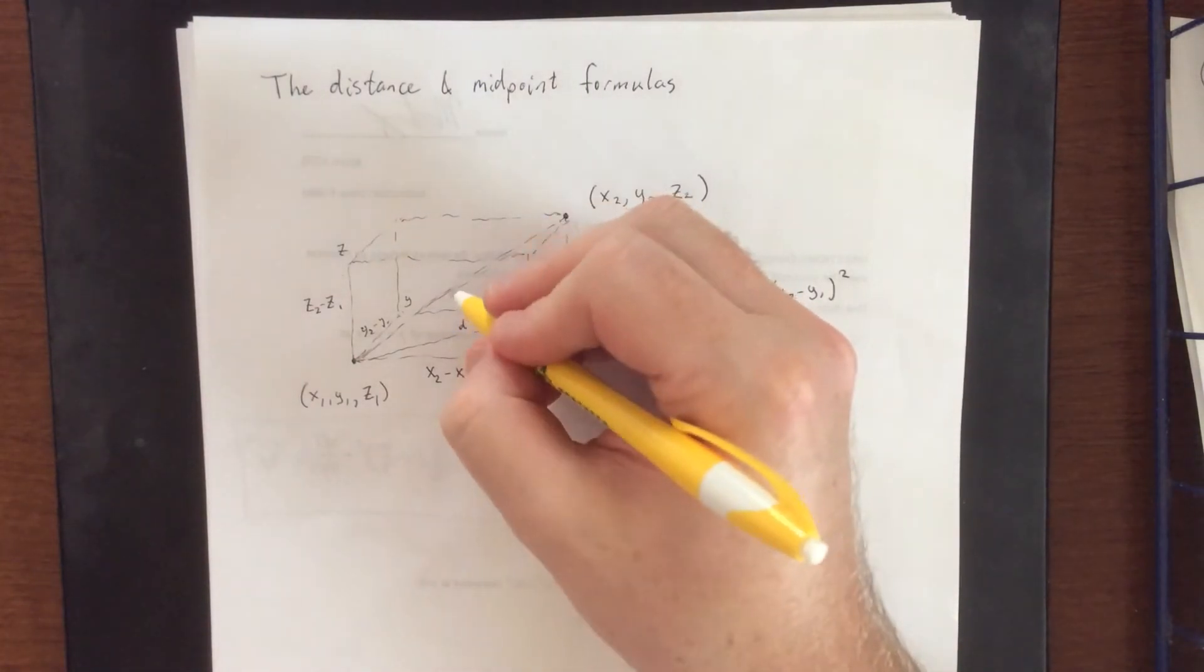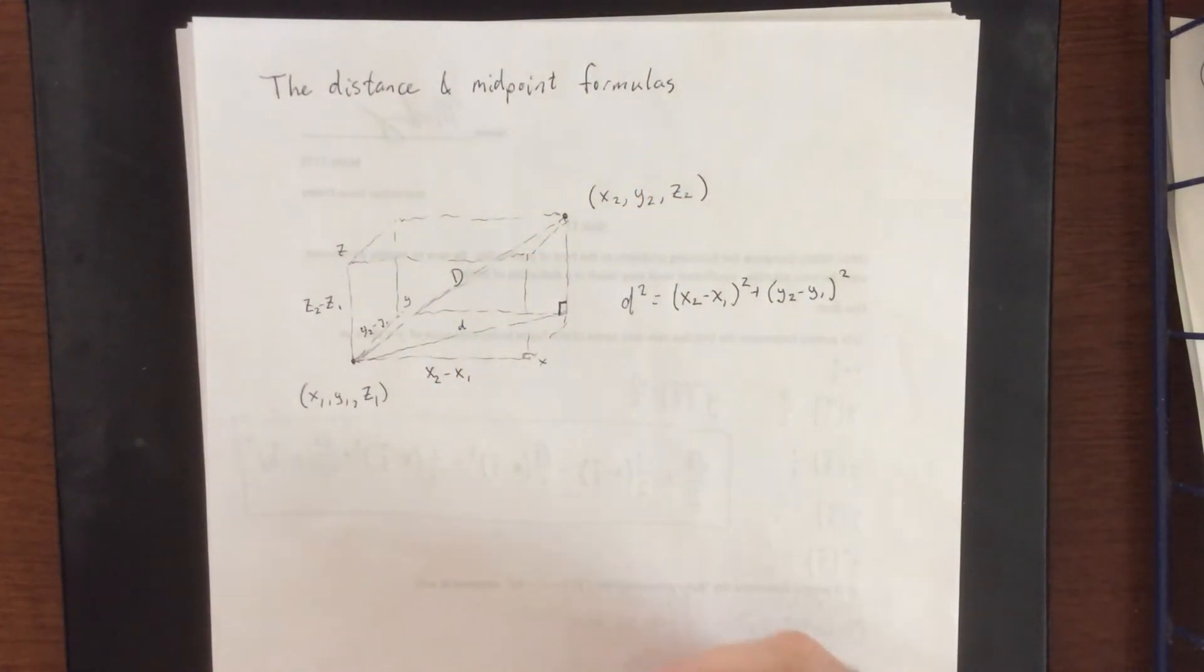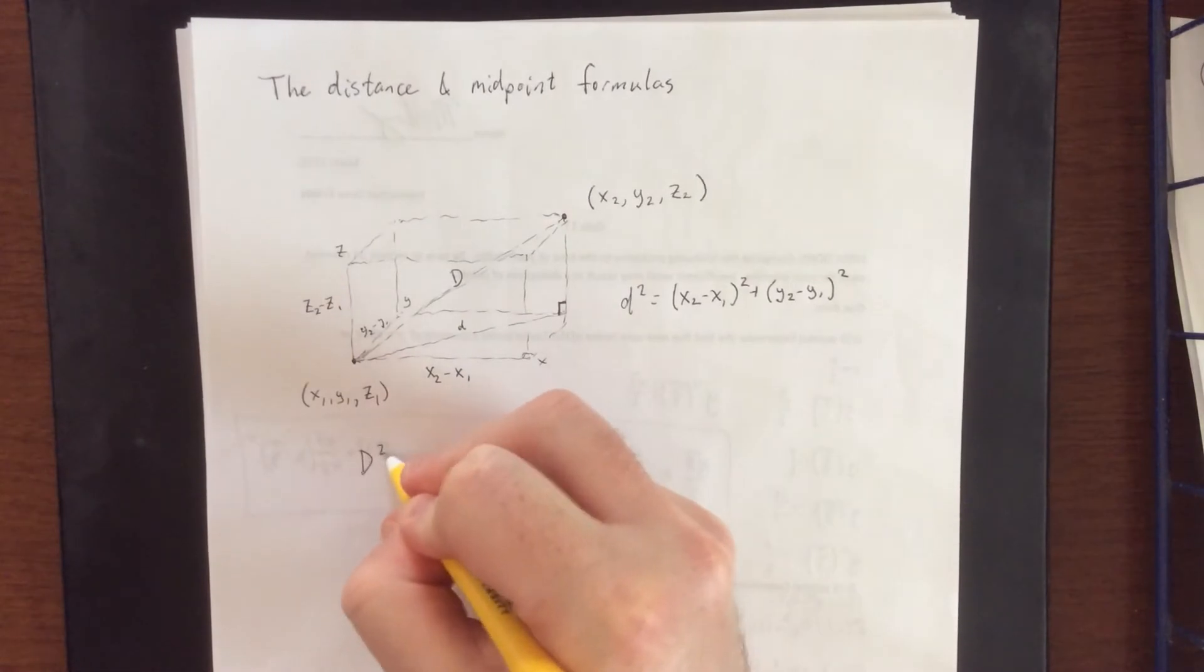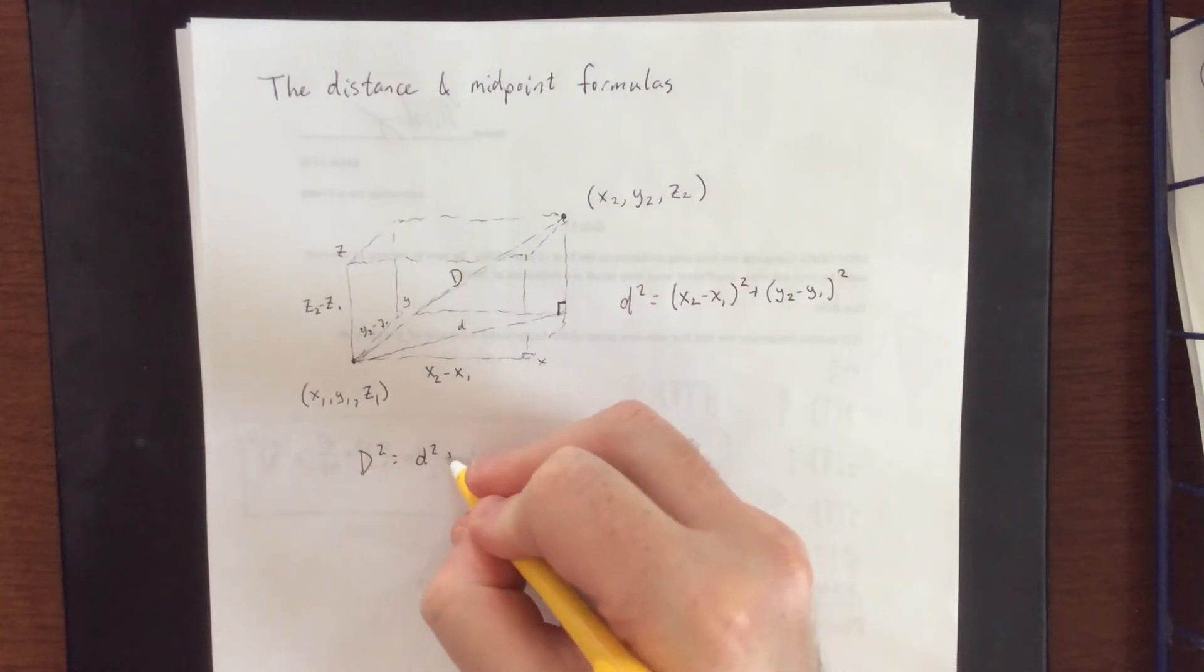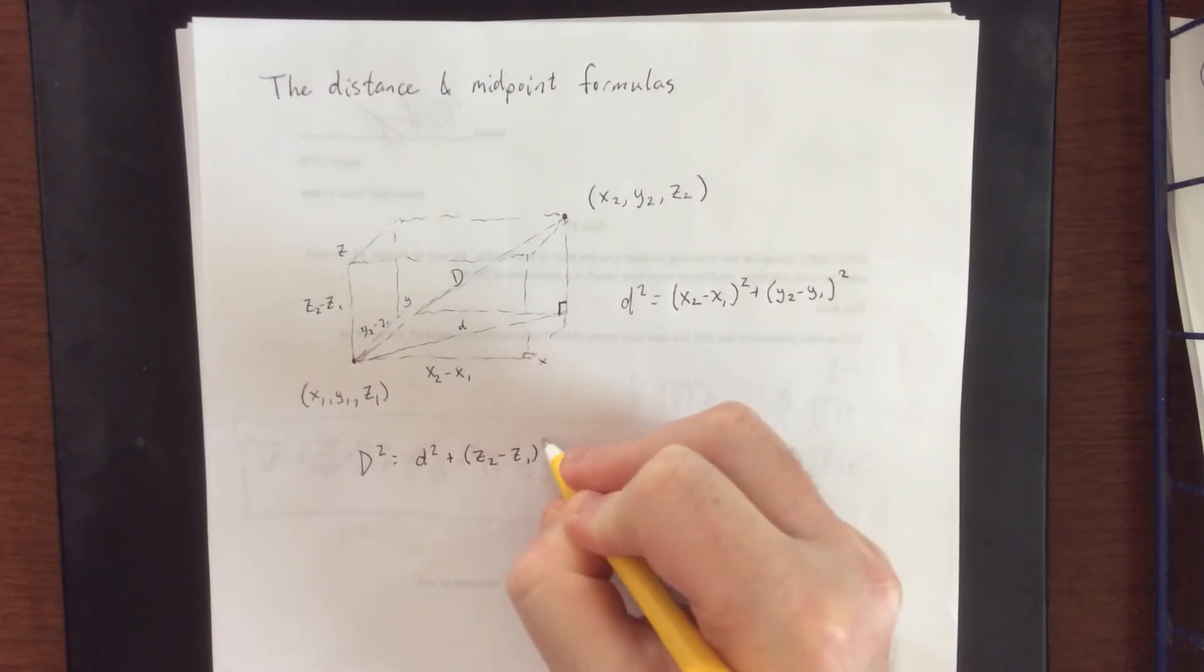Therefore, for the big distance—we'll call it capital D—we could say that D² is equal to little d² (that leg) plus this leg squared, which would be (z₂ - z₁)².